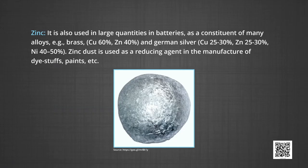Now, the uses of zinc. Zinc is used for galvanizing iron. It is also used in large quantities in batteries as a constituent of many alloys. Example, brass contains 60 percent copper and 40 percent zinc. And German silver contains 25 to 30 percent copper, 25 to 30 percent zinc and 40 to 50 percent nickel. Zinc dust is used as a reducing agent in the manufacture of dye stuffs, paints, etc.